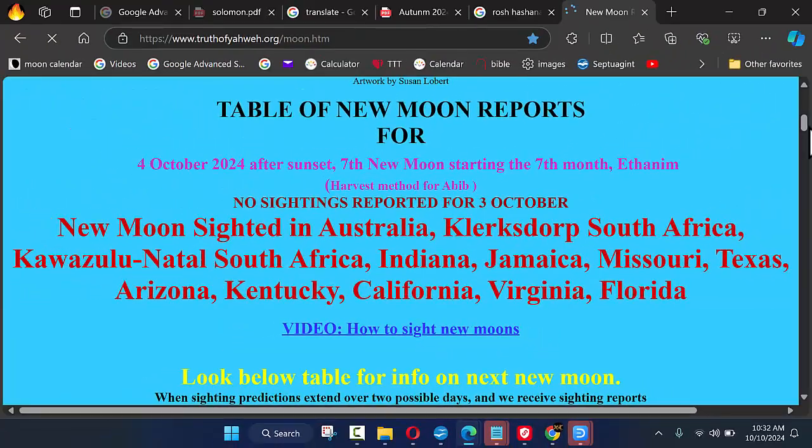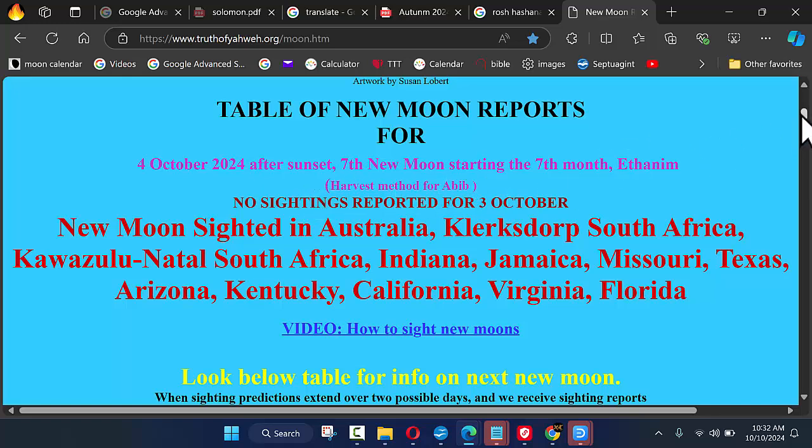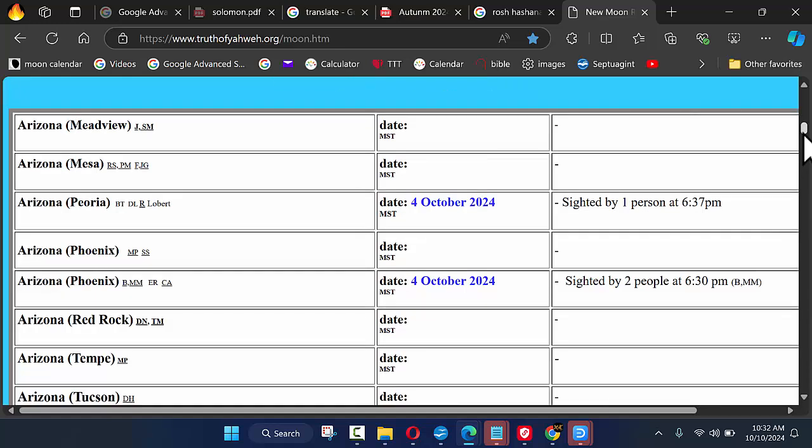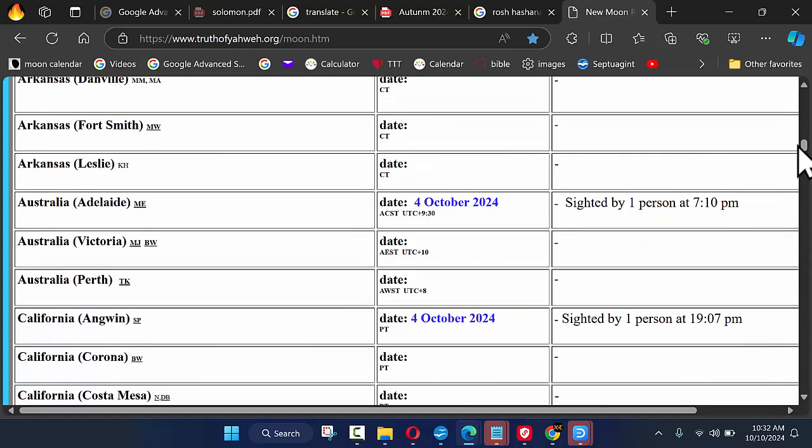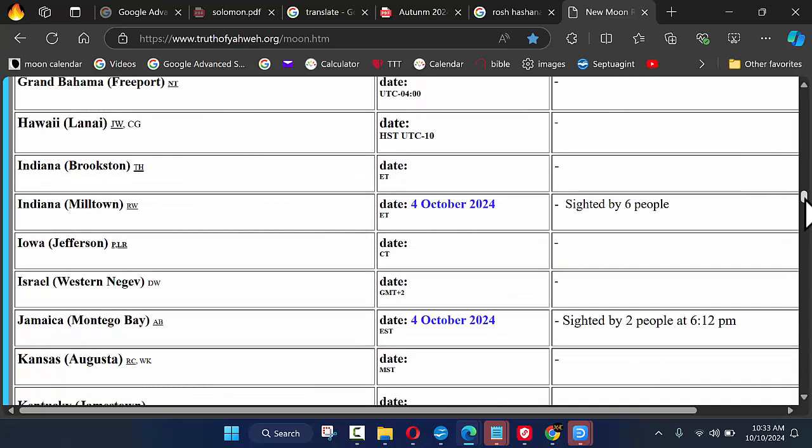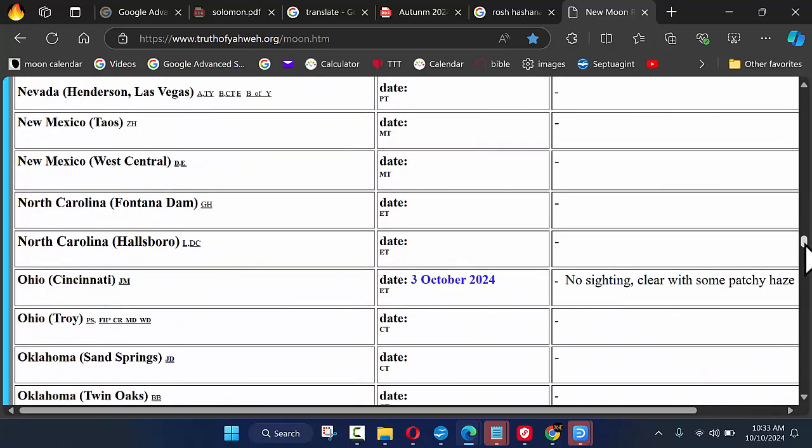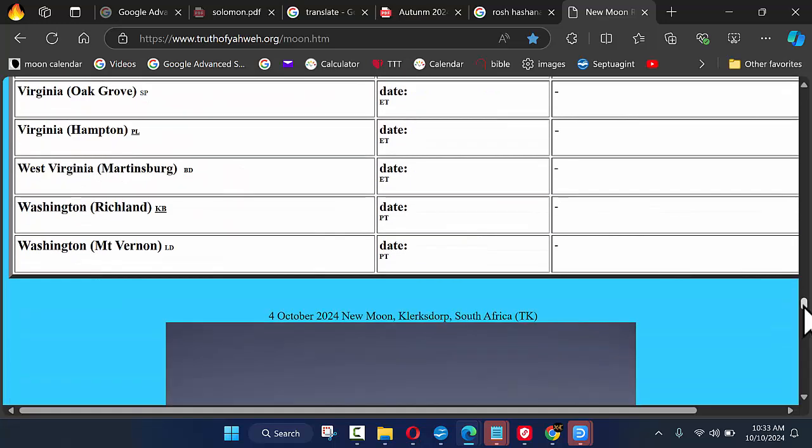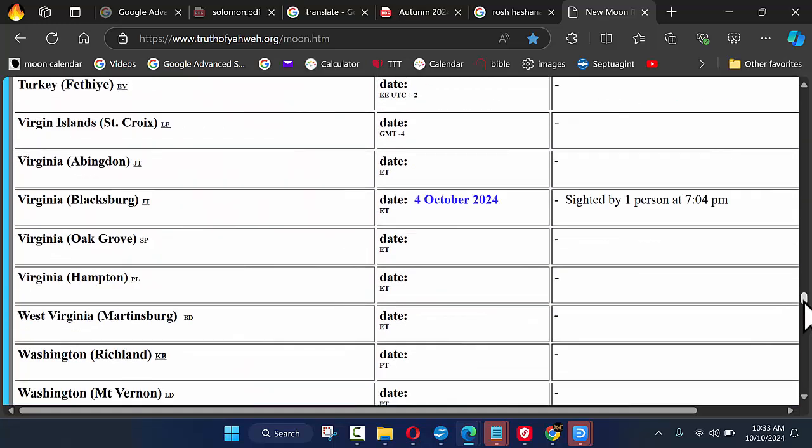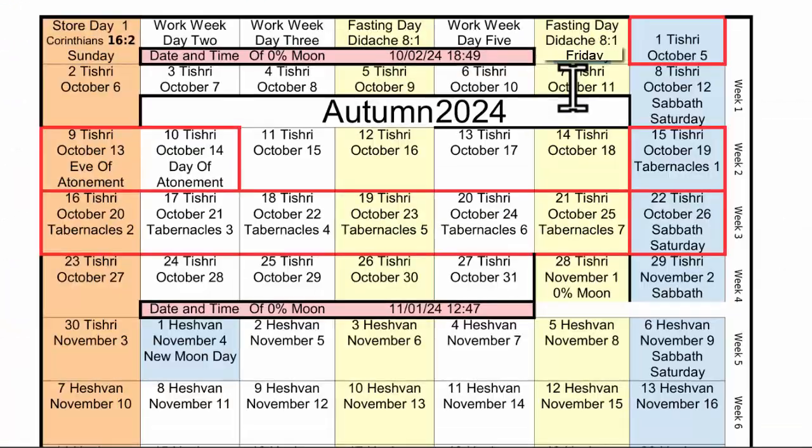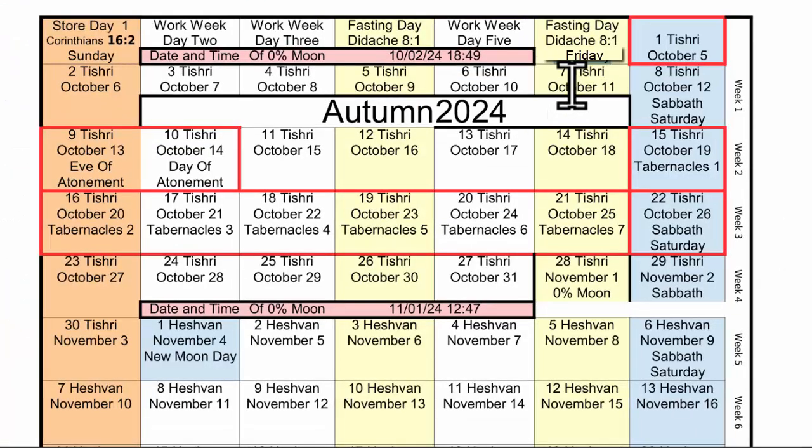We can be sure that they are starting early, looking for the sightings over at truthofyahweh.org. We can see that there was no sightings reported as of October 3rd in the year 2024. And we can see that there were three people from Arizona, one from California, as well as Australia, two people in Florida, six in Indiana, two in Jamaica, two in Kentucky, Missouri, three in South Africa, one in Texas and Virginia all saw the new moon on October 4th, which was a Friday on the Gregorian calendar.